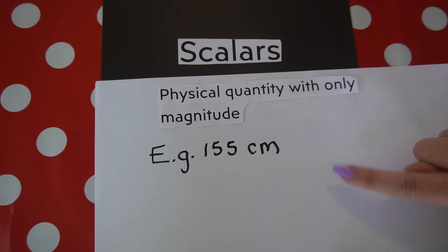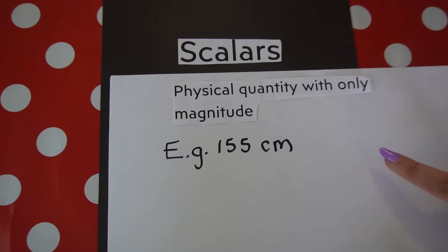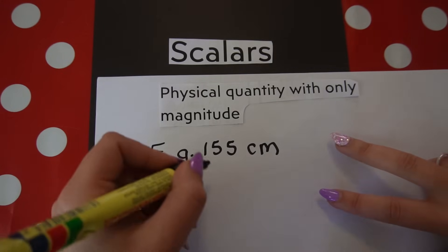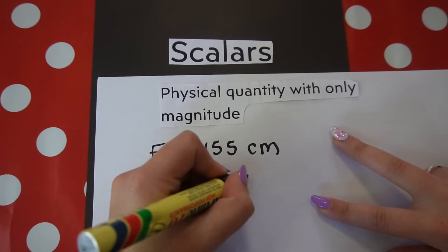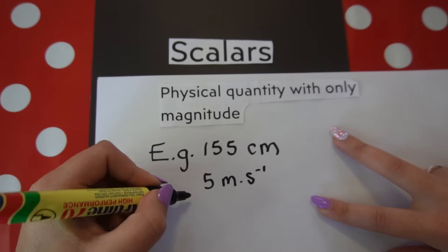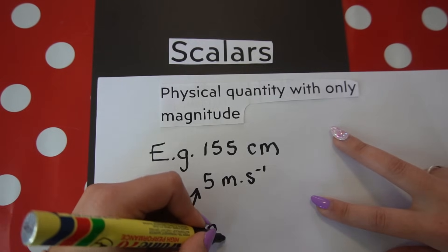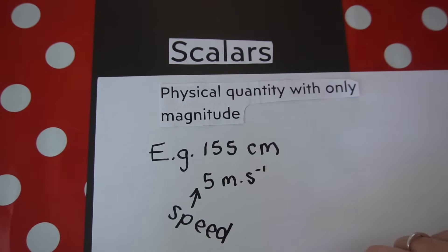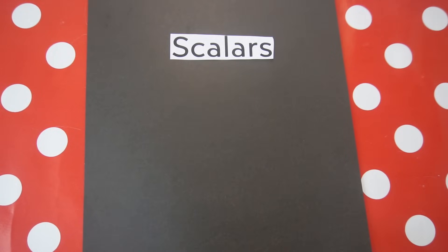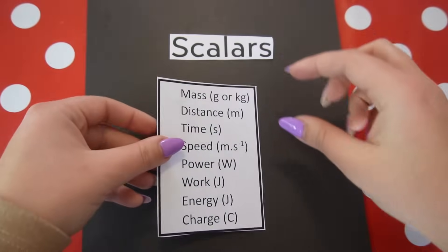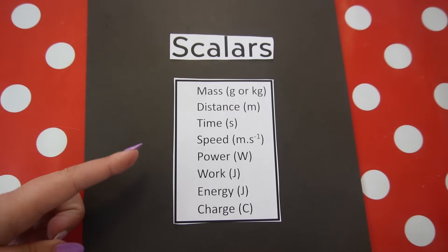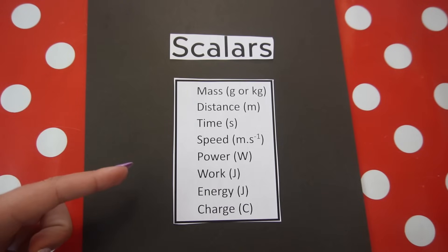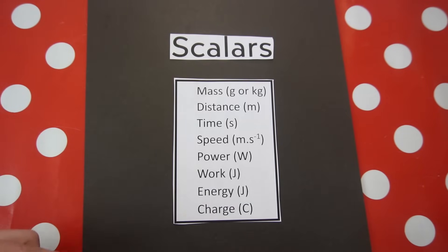Scalars have only magnitude; they do not have a direction. For example, if a car was traveling at five meters per second, this is what we call speed, and speed is a scalar — speed has no direction.